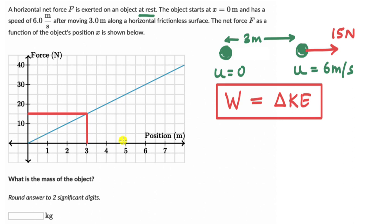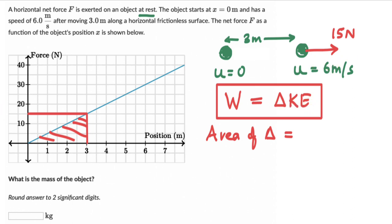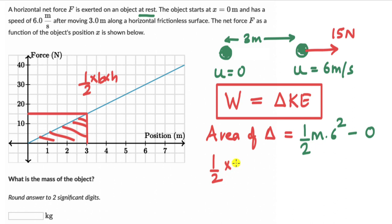For a force-position graph, we can calculate the area under the curve — in this case, the area of a triangle. This area equals the change in kinetic energy. So: area of triangle = final kinetic energy minus initial kinetic energy. That gives us: half × base × height = half × m × 6² − half × m × 0. The area of the triangle is half × 3 × 50, and the right side simplifies to half × m × 36.